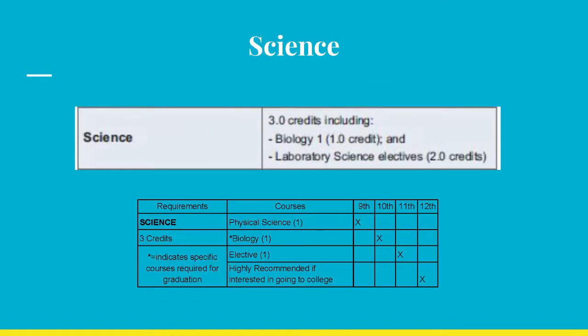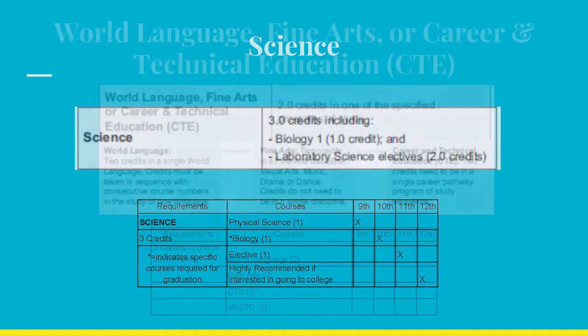Science requires only three credits as well, with one being in Biology. Once again, if you are planning to attend college, it is strongly recommended that you take a fourth Science course in your senior year.